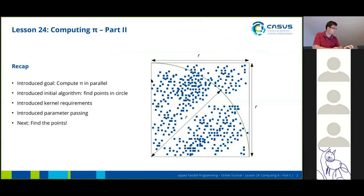Computing pi part 2. We just introduced that we want to compute pi in a parallel fashion. Our initial algorithm will be to find points in a circle. We introduced how to pass parameters to the kernel, and our next step will be to actually find the points inside the kernel.